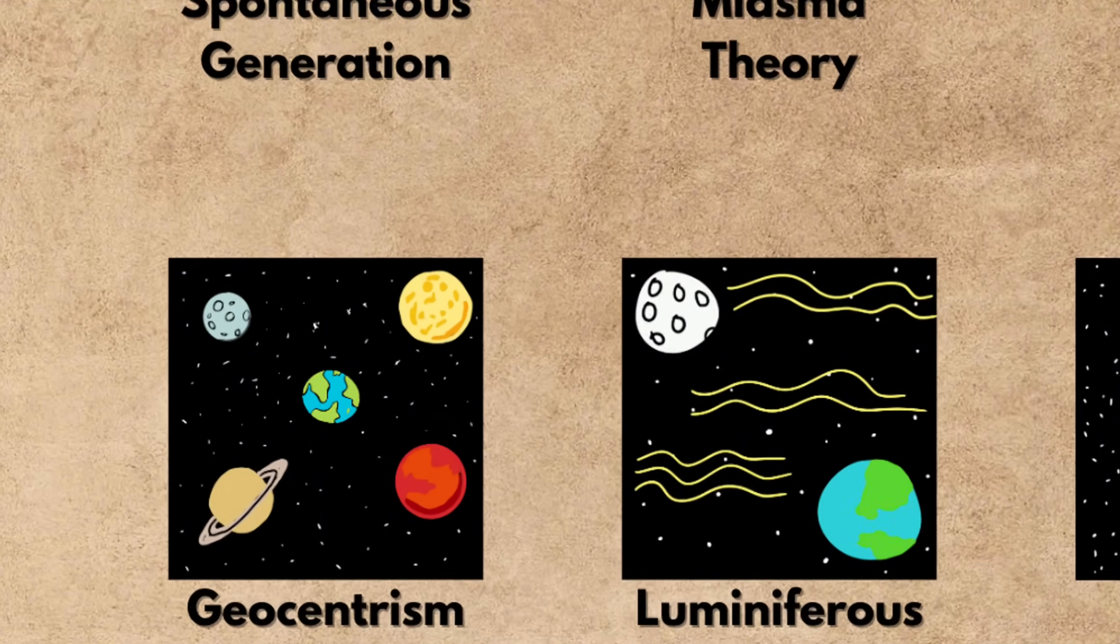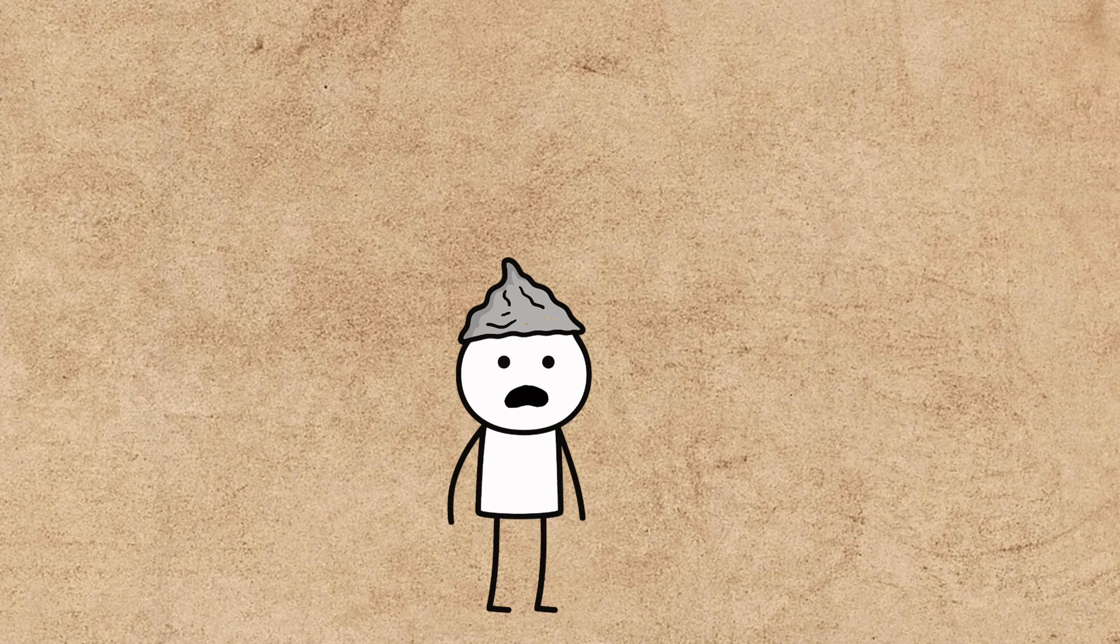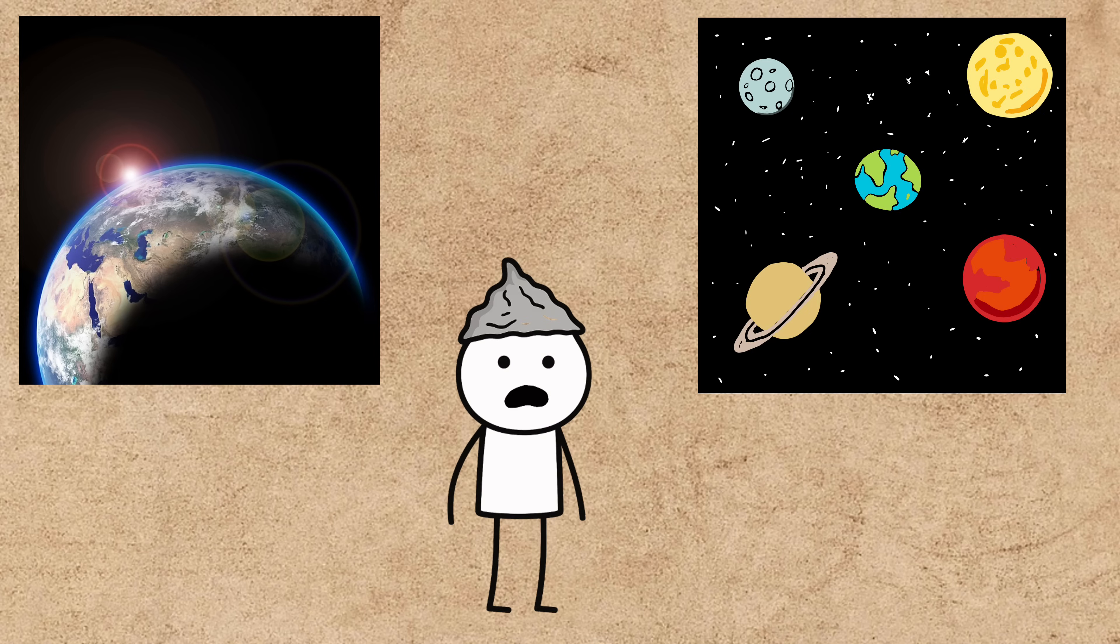Now, back to the list. At number four, we have a classic case of cosmic main character syndrome: geocentrism. For over 1,500 years, this was the model of the universe, and its premise was simple. The Earth is the stationary center of everything, and the sun, moon, planets, and stars all revolve around us.